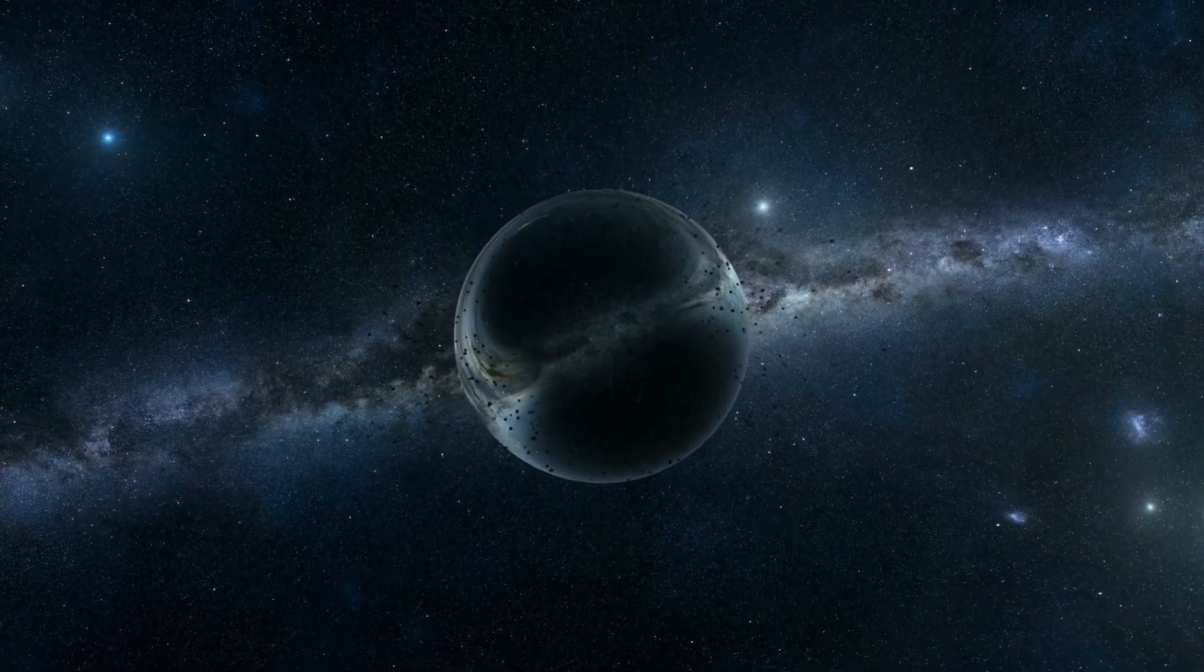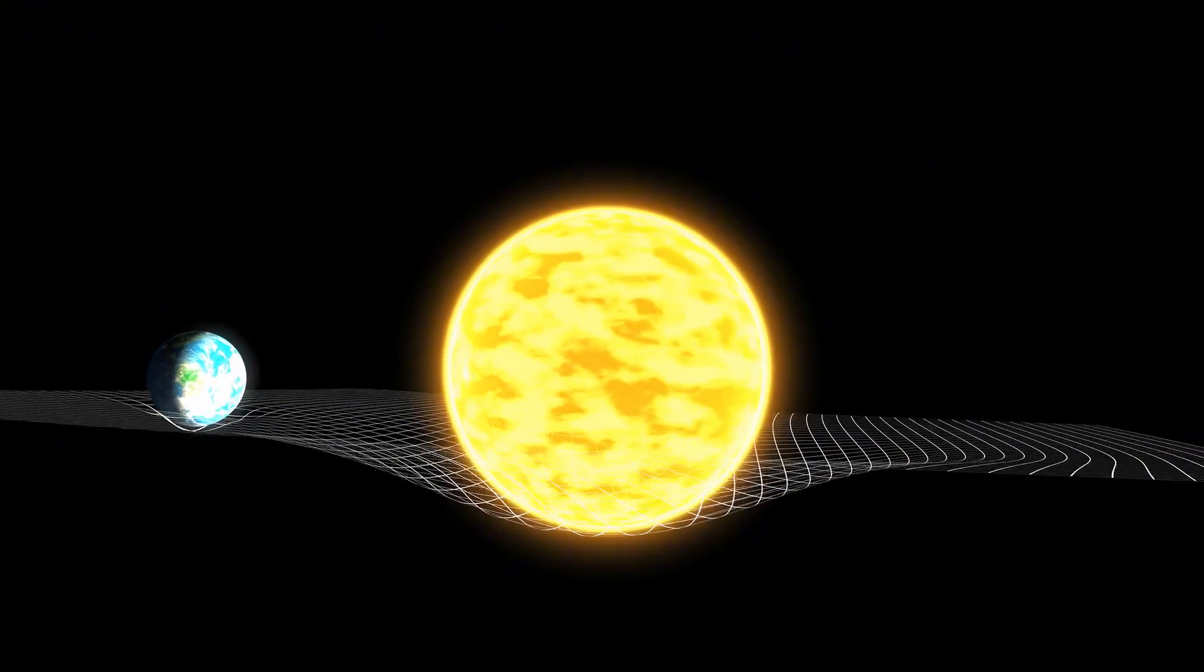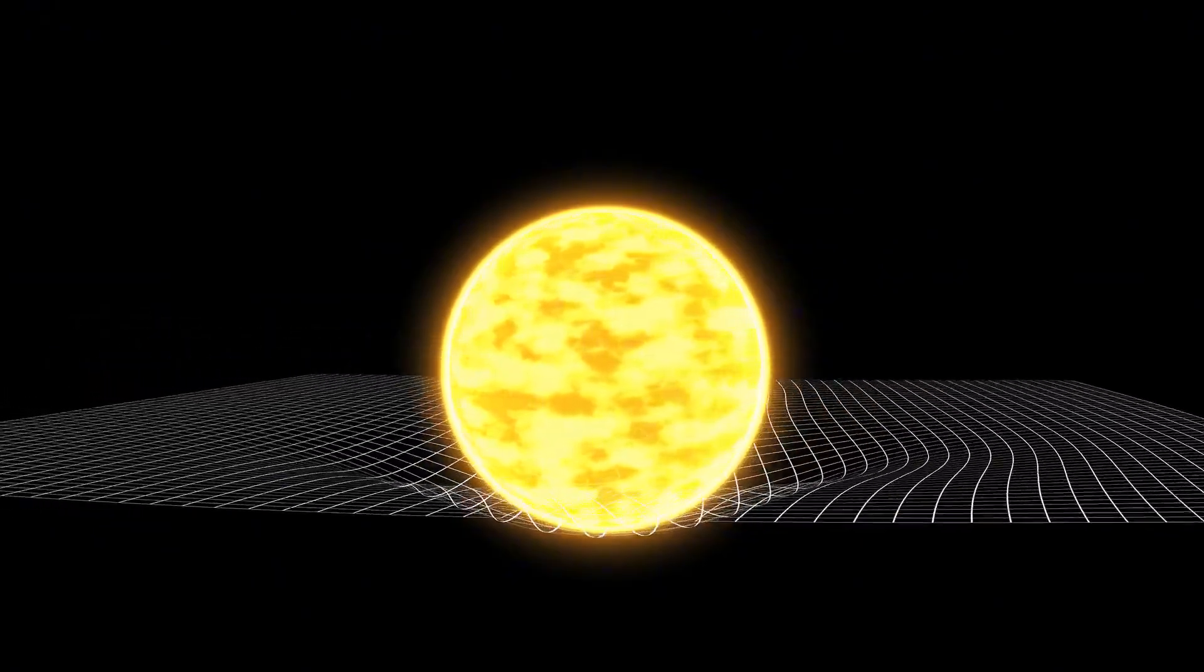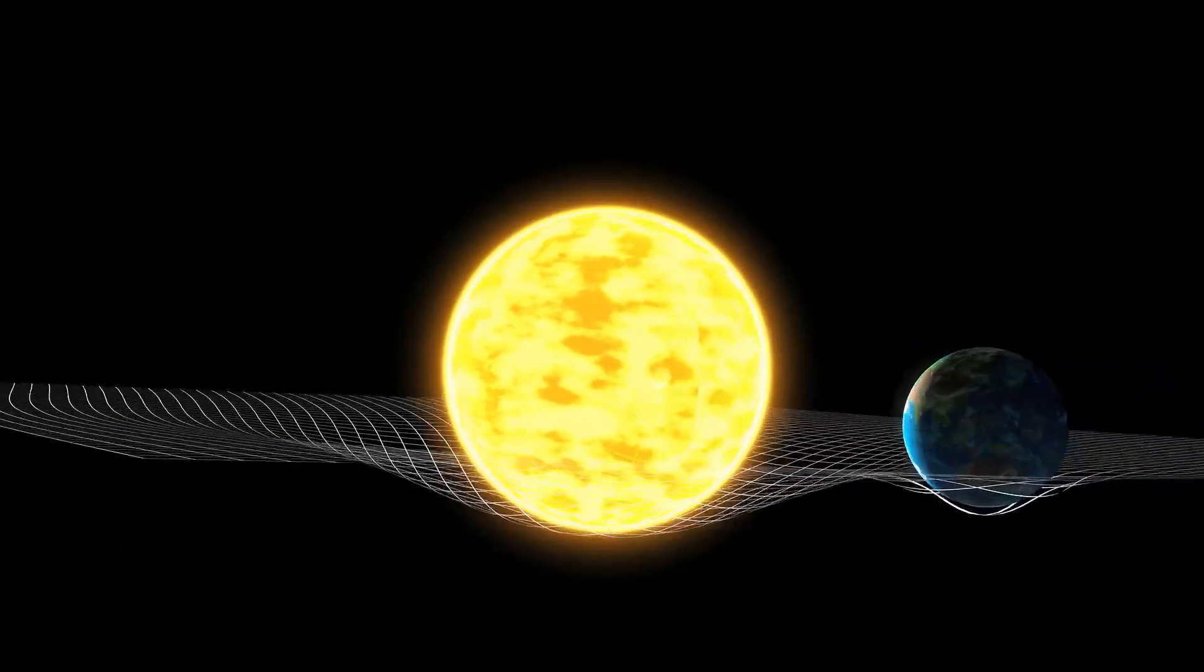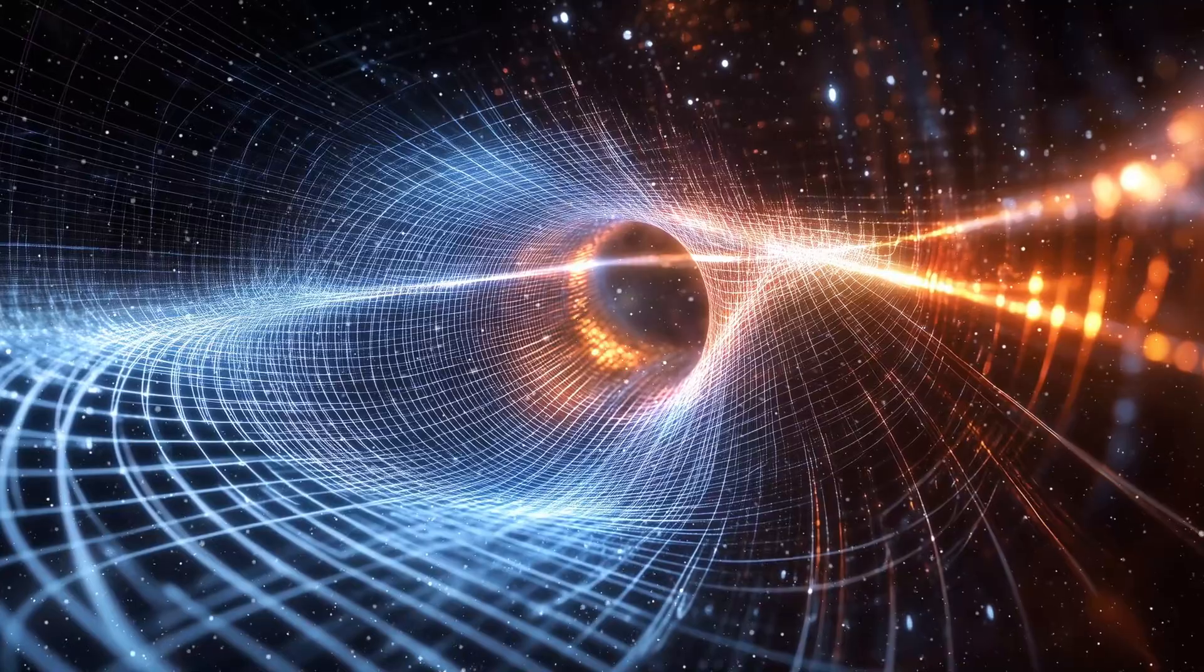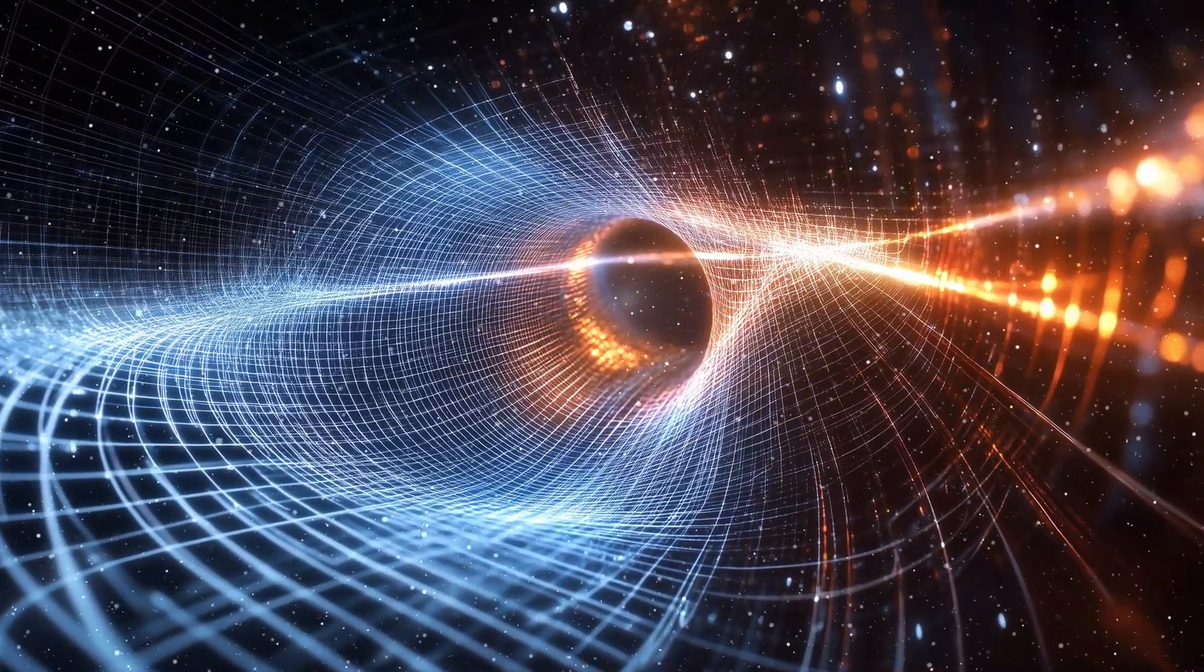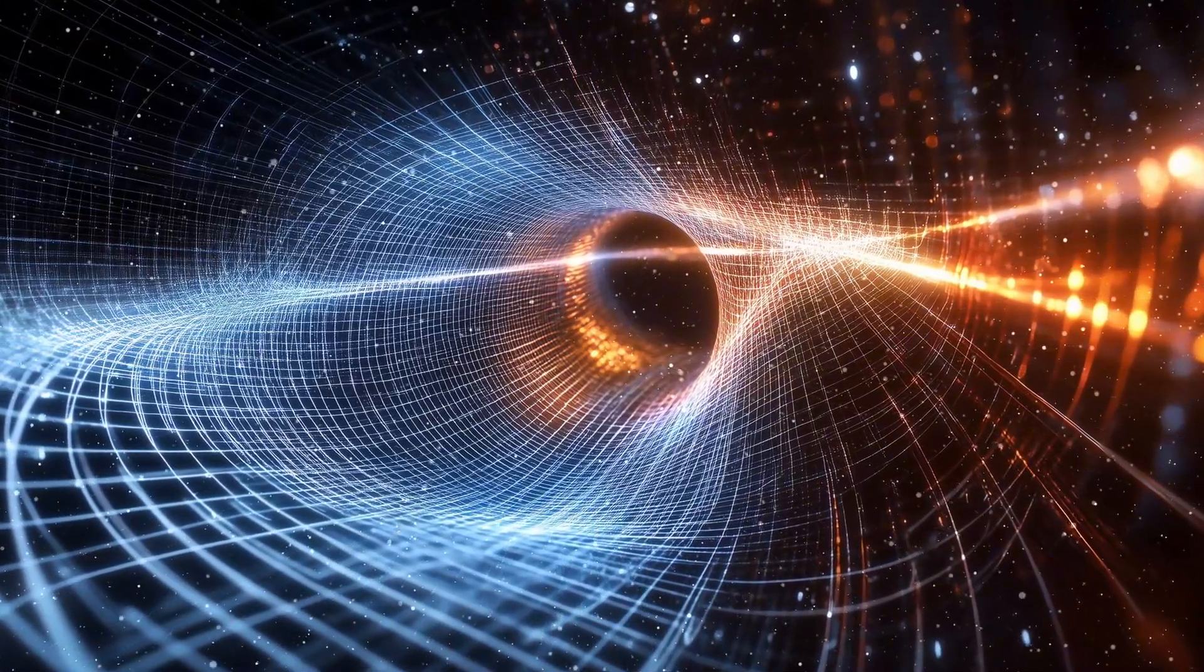Scientists now suggest that a traversable wormhole might only be permeable to the most fundamental force we know, gravity. Imagine you are standing outside a sealed concert hall. You cannot see the musicians, and you cannot hear the intricate melodies of the violins or the sharp notes of the horns. The thick walls block those complex sounds. But you can feel the floor vibrating with the deep, percussive beat of the bass drum. The lowest frequency, the most powerful vibration, is able to pass through the barrier when all other information is lost.